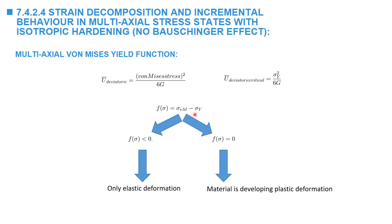The von Mises stress is often termed the equivalent stress, since it provides an equivalent value for a multidimensional state of stress and compares this value to the yield stress. The yield function predicts either a negative value, indicating only elastic deformation, or if the von Mises stress reaches sigma yield, the model predicts the evolution of plastic deformation in the material.